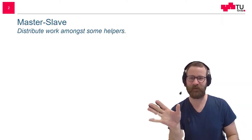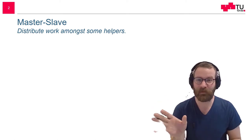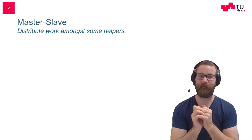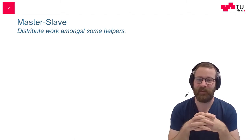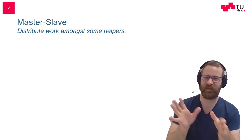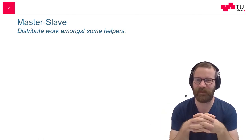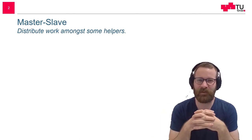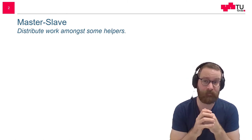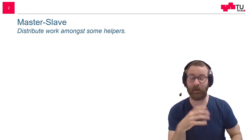What is the Master-Slave Pattern all about? It is about distributing work amongst some helpers. Master-Slave is not the politically correct name for this pattern anymore. Today we would say Coordinator-Helper, Coordinator-Worker, something like this.